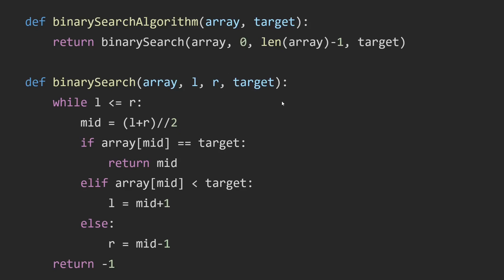Then as long as L is smaller or equal to R, or as long as L is to the left of R, we calculate the mid index. Then we look into the array at mid. If we find a target then we simply return the mid index.